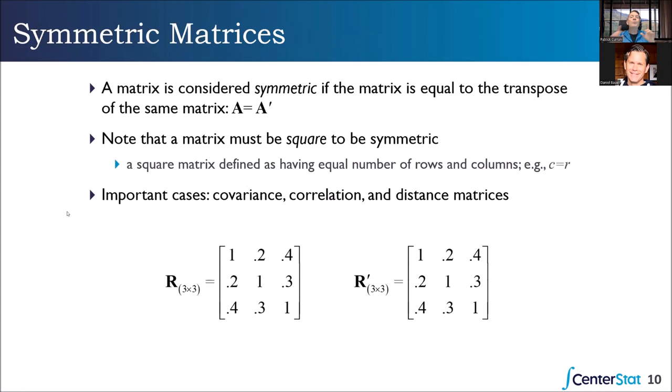Now let's use what we just did with a transpose to define another term: a symmetric matrix. Technically, what it means is that the transpose of the matrix equals the target matrix — if you have A and you transpose it to get A-prime and they are the same, then it's called a symmetric matrix.